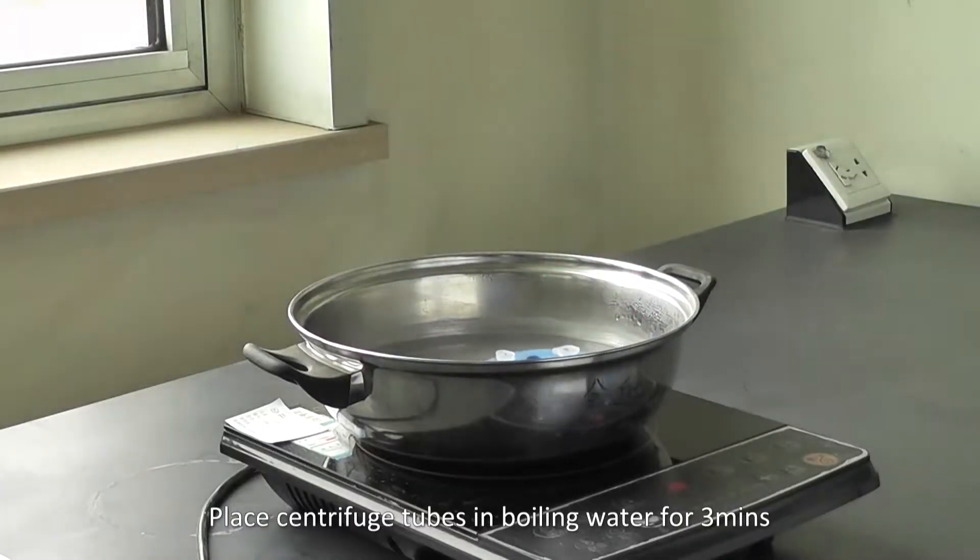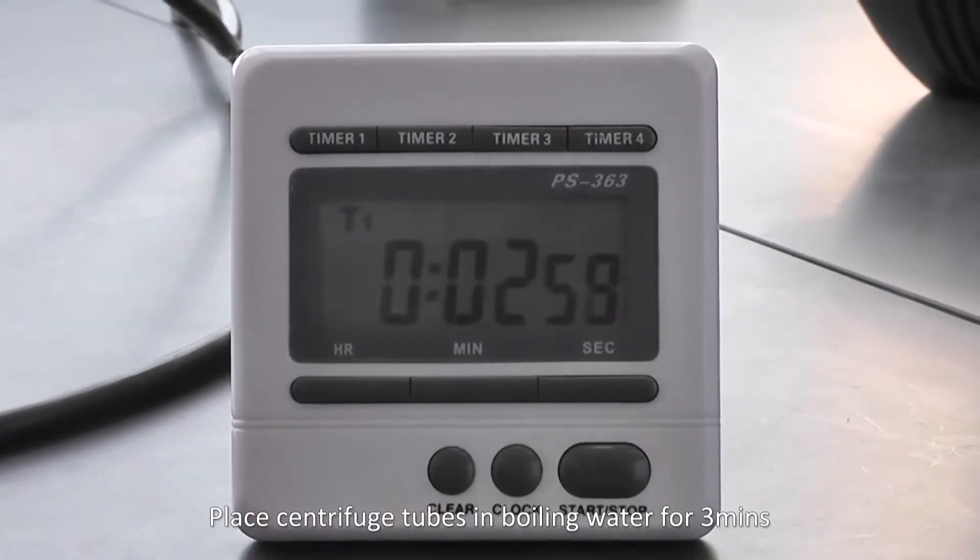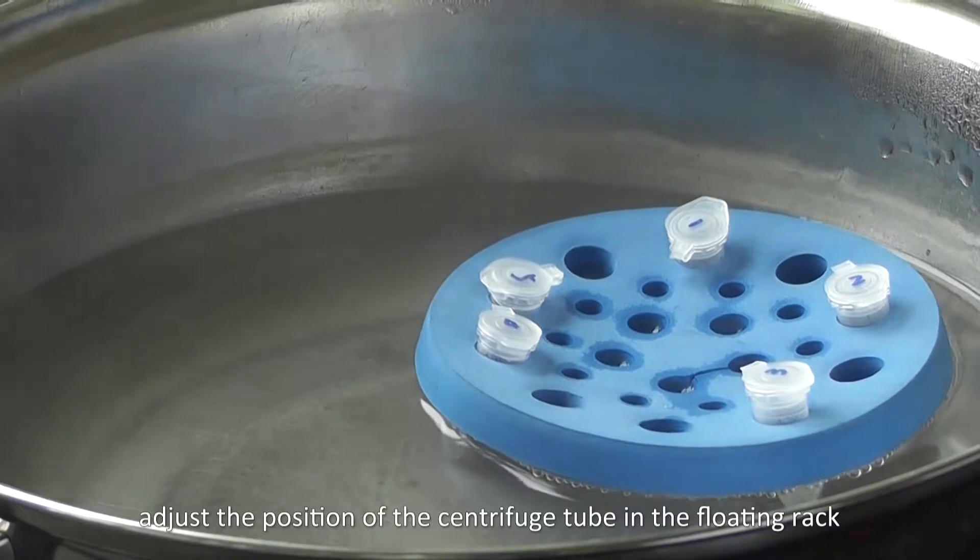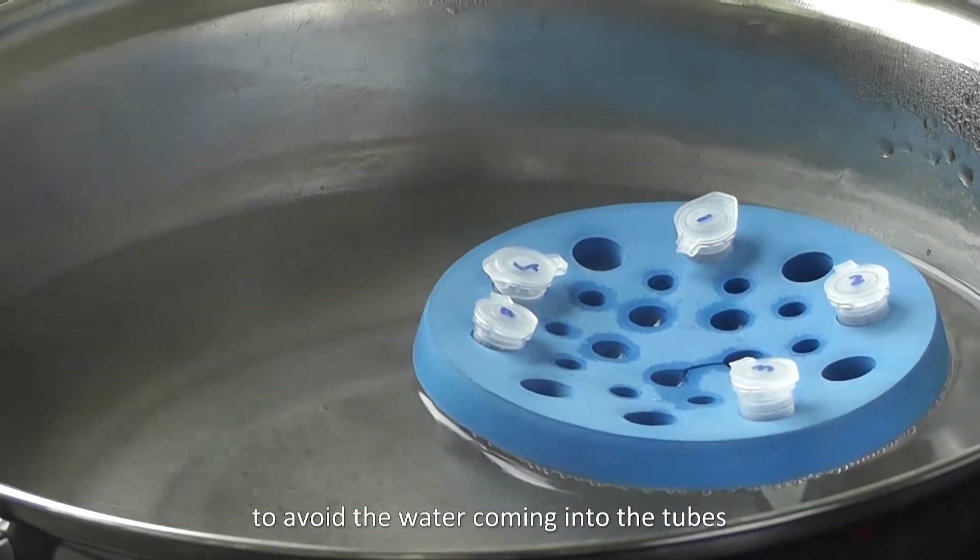Place the centrifuge tubes in boiling water for 3 minutes. Adjust the position of the centrifuge tube in the floating rack to avoid the water coming into the tubes.